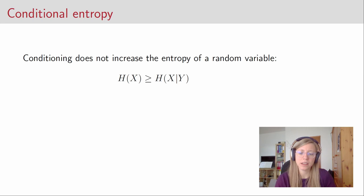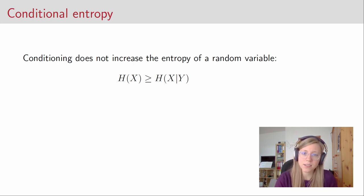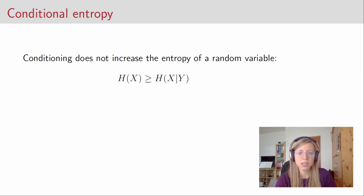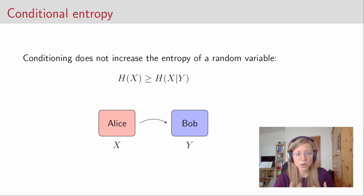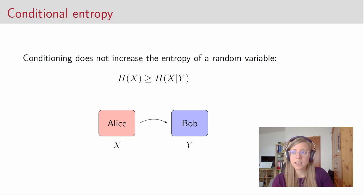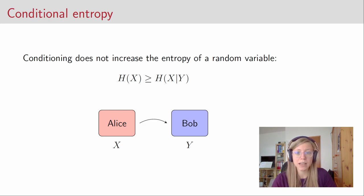How does it relate to the marginal entropy of the random variable X? Well, conditioning does not increase the entropy of a random variable. So the entropy of a random variable X is always greater than or equal to the entropy of the random variable conditioned on some side information Y. Intuitively, the entropy of X represents Bob's uncertainty about Alice's random variable before he got any information, and the conditional entropy is his uncertainty after he gained some information — so this should only decrease.